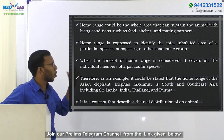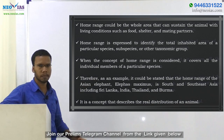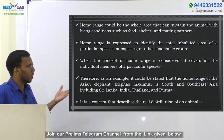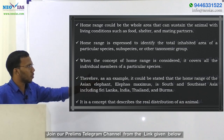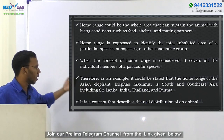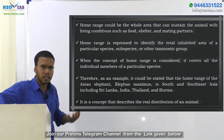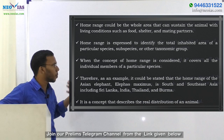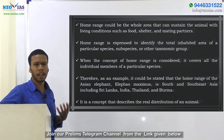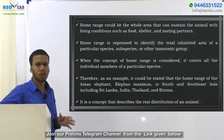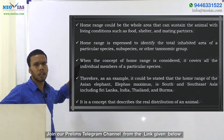When the concept of home range is considered, it covers all the individual members of a particular species. For example, we can say that the home range of the Asian elephant is South and Southeast Asia, including Sri Lanka, India, Thailand, and Burma. It is a concept that describes the real distribution of an animal — wherever the species occur, we can understand that from the home range of that species.